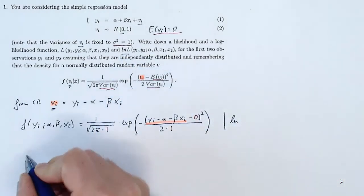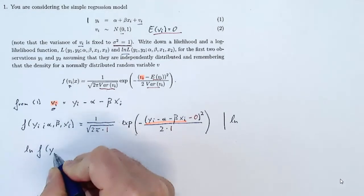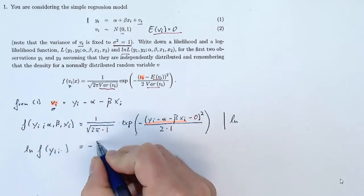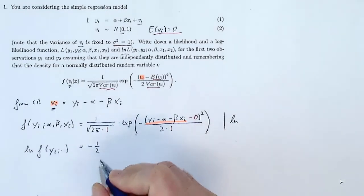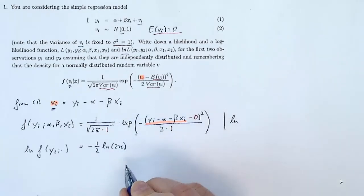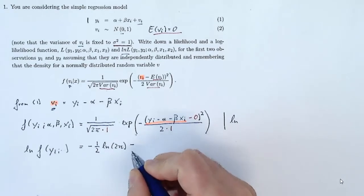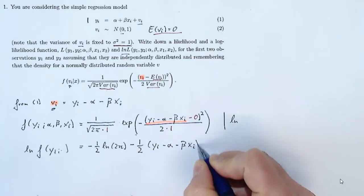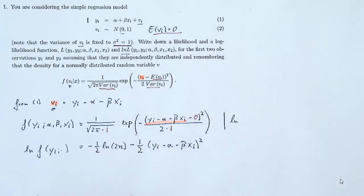The expected value is 0. The whole thing is squared and divided by 2 times the variance of vi, which is just 1. This is now our density for yi, which is essentially the density of yi. Then we take the log of this density, so we have the log of f of yi.